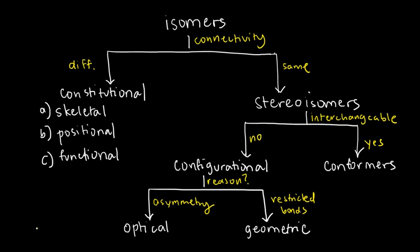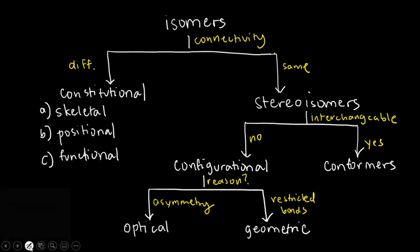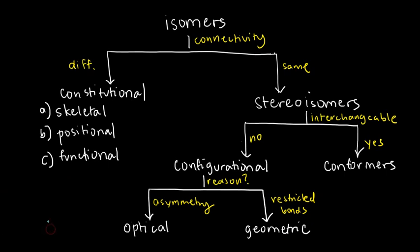Here we will be covering one of perhaps the most difficult, or probably the most annoying, introductory organic chemistry topics. We'll be discussing isomers. Before we start, we need to define what an isomer is. You cannot even say what an isomer is because it's always relative. For you to say that something is an isomer, it should be relative to something else.